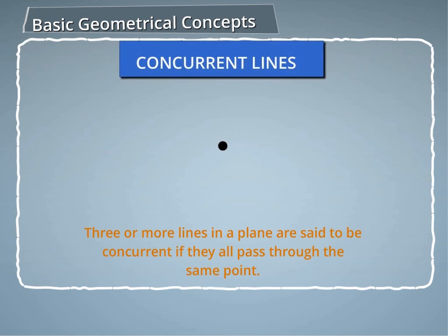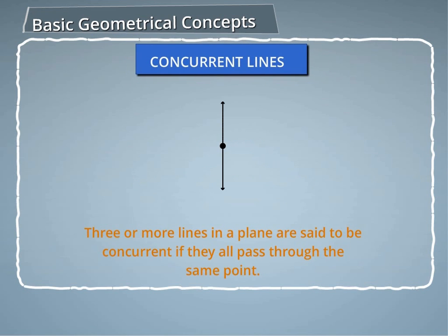Linear. Three or more lines in a plane are said to be concurrent if they all pass through the same point.